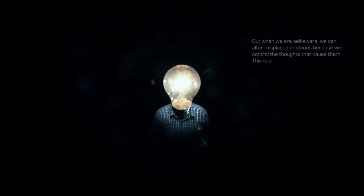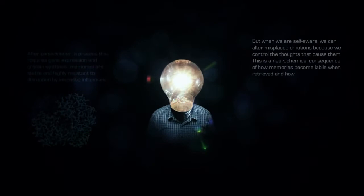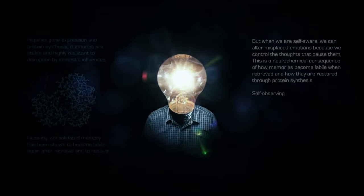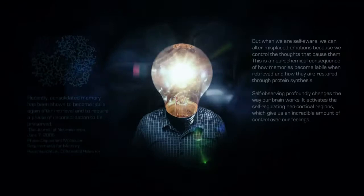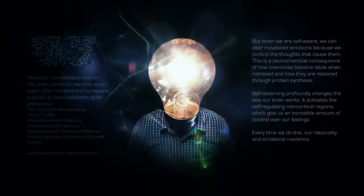But when we are self-aware, we can alter misplaced emotions because we control the thoughts that cause them. This is a neurochemical consequence of how memories become labeled when retrieved and how they are restored through protein synthesis. Self-observing profoundly changes the way our brain works. It activates the self-regulating neocortical regions which give us an incredible amount of control over our feelings. Every time we do this, our rationality and emotional resilience are strengthened.